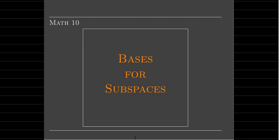In this video, we're still talking about subspaces. We're talking about a specific finite set of vectors which belong to a subspace, which is called a basis. So we have this word basis, which we have seen before, and we talked about standard basis vectors. The plural of basis is bases, pronounced with a long E sound. So we're going to talk about really what is a basis.